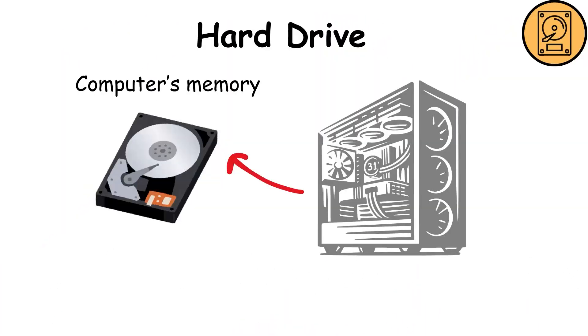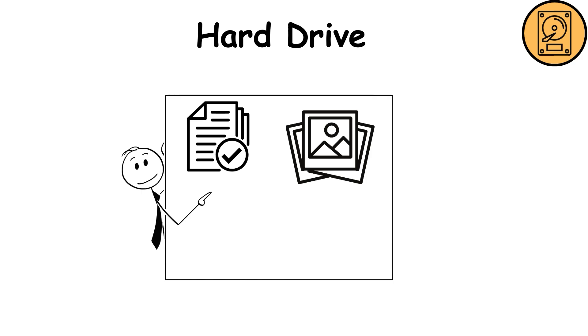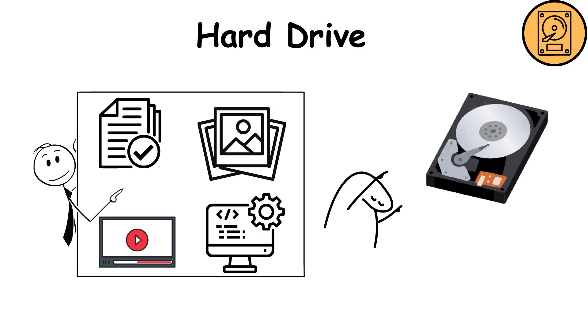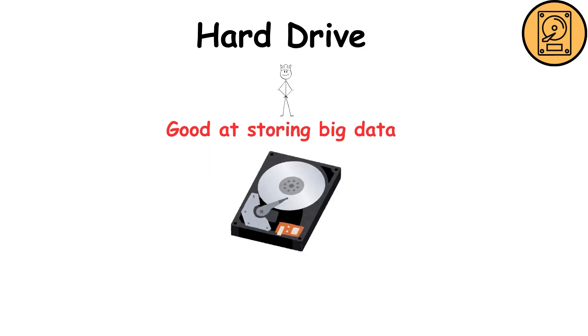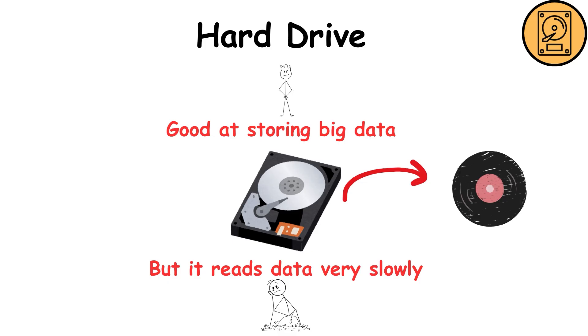Hard drive. The hard drive is the computer's memory. Documents, photos, videos, programs—everything is stored here. Hard drives can store large amounts of data, but are relatively slow because they use spinning discs to read and write information.